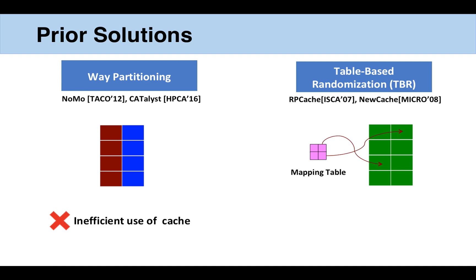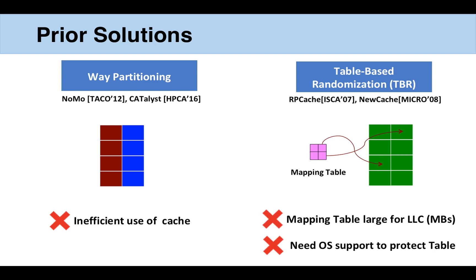Second, table-based randomization, where the line-to-cache mapping is decided randomly and this mapping is stored in a mapping table. Unfortunately, for an LLC, this mapping table becomes quite large — several megabytes — and now the mapping table itself can be attacked. That's why some OS support is required to classify applications into protected and unprotected categories, and only protected applications are allowed access to the mapping table.